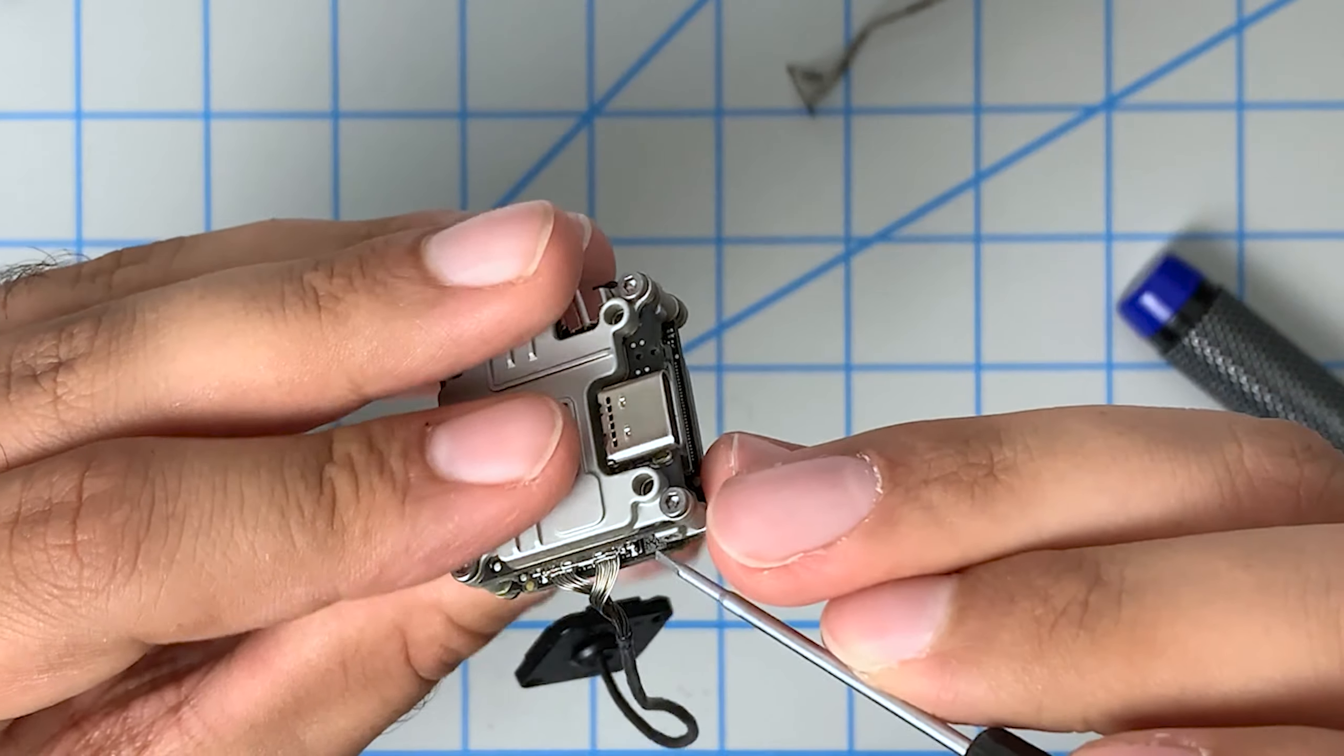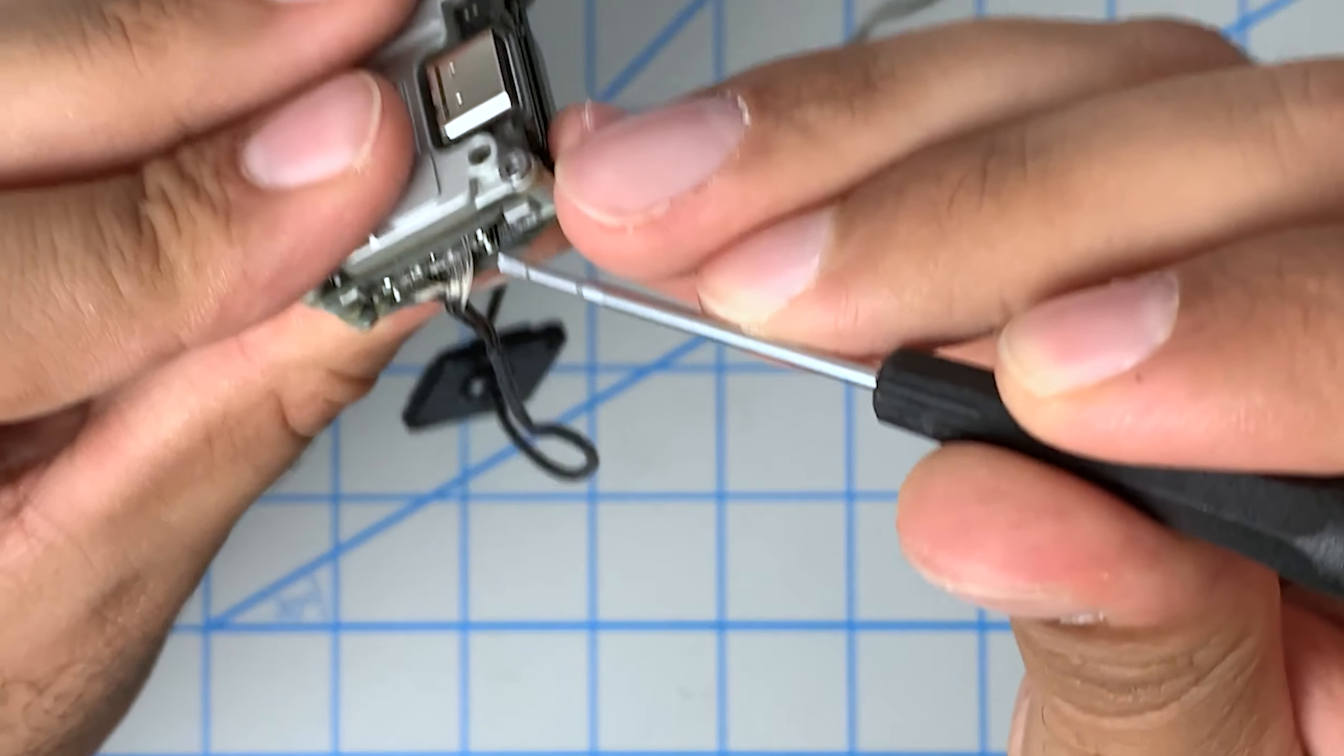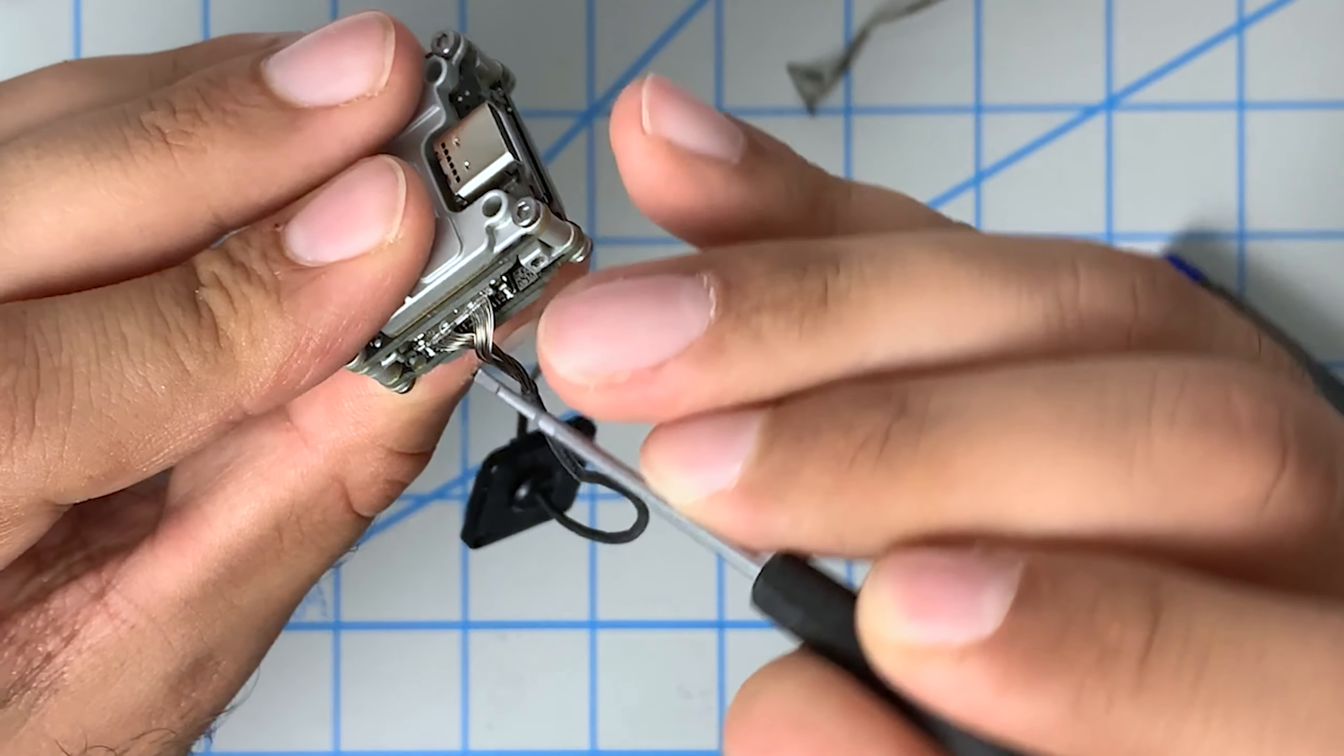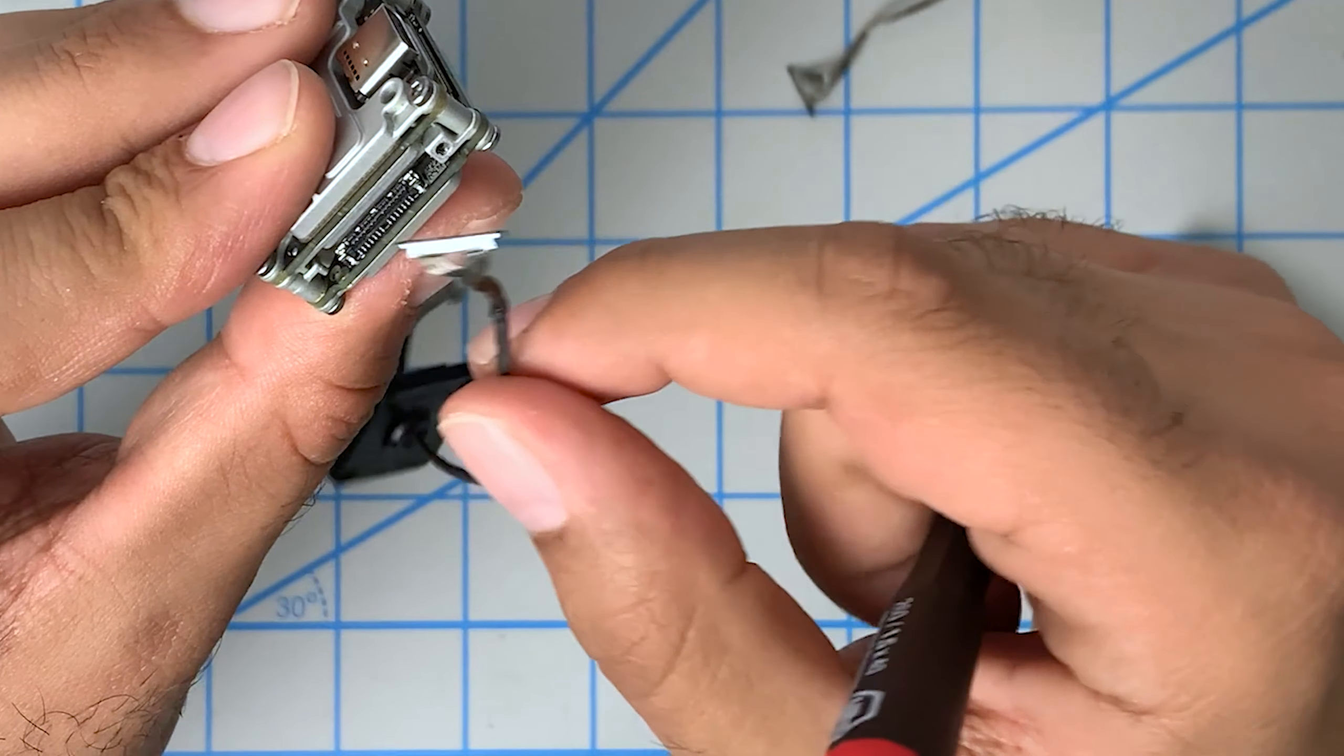And very similarly, it's going to have two little notches on the side here. So we want to get those two little notches out. That side's out. And that side's out. Okay.